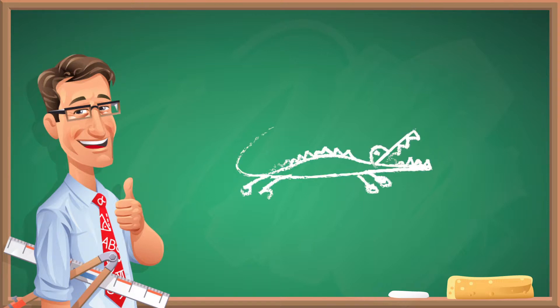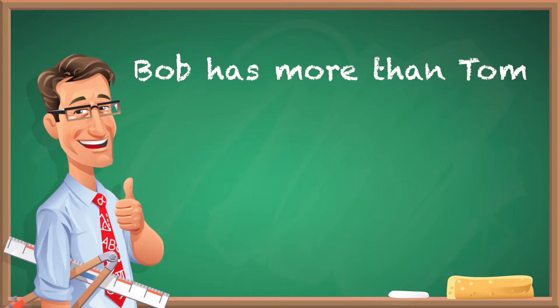They like to look at it as an alligator's mouth, and the alligator wants to eat whatever is greater. So if you have the open side or the mouth open toward whatever is greater, that's what it's gonna look like. So if you have an example like Bob has more than Tom, you're gonna write it as Bob greater than symbol Tom, or B greater than symbol T, to make sure that alligator's mouth is facing B.